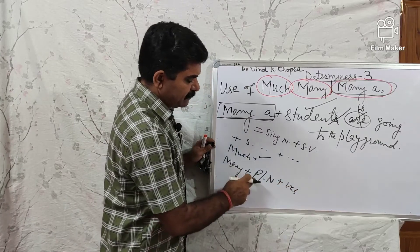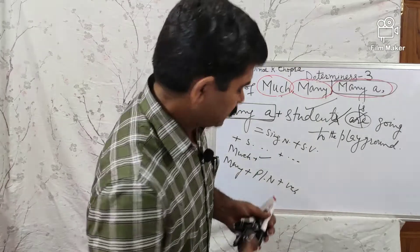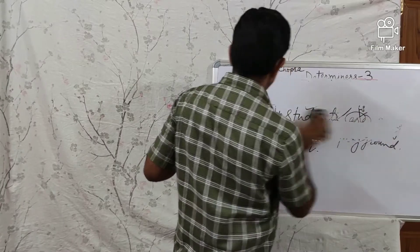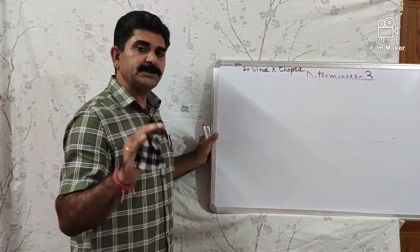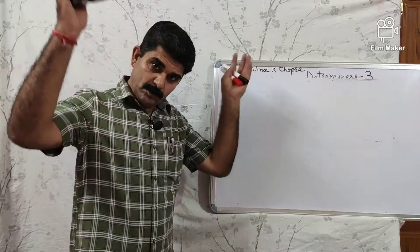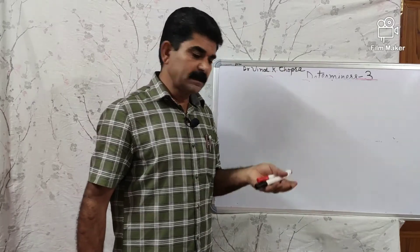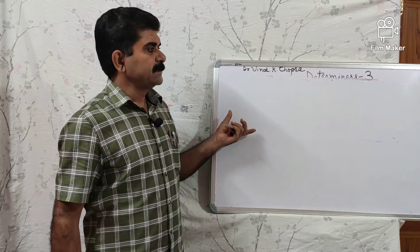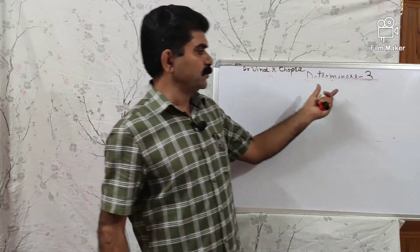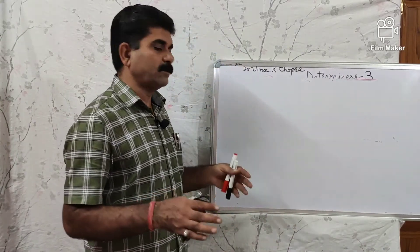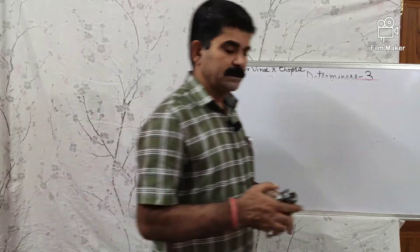So many boys — interrogative: how many boys are? We have covered many determiners in this lecture: much, many, many a, so many, a lot of, lots of, a great number of, great numbers of, a good deal of, a great deal of. In Part 4, we will continue with more determiners. We have already covered demonstrative adjectives, adjectives of quantity, adjectives of number, and articles. Thank you.